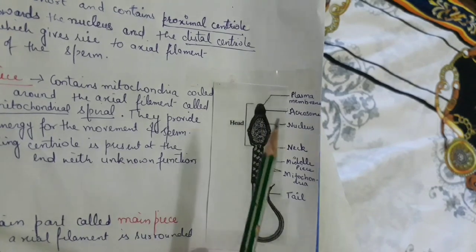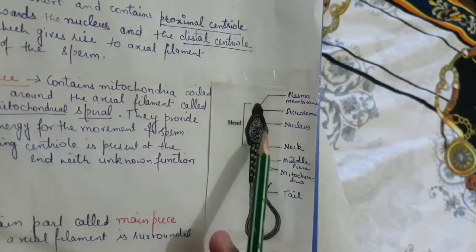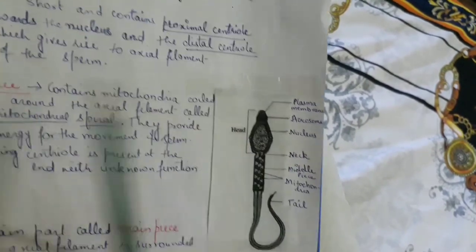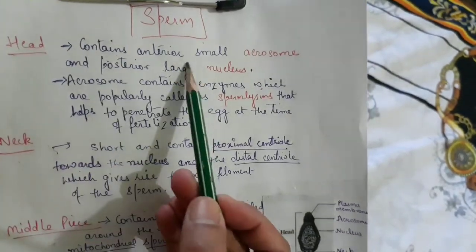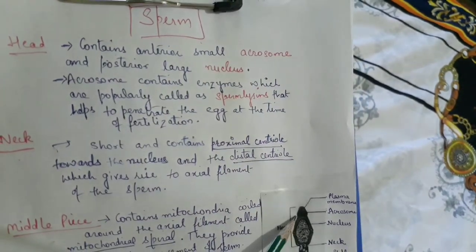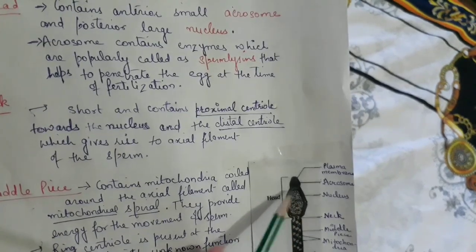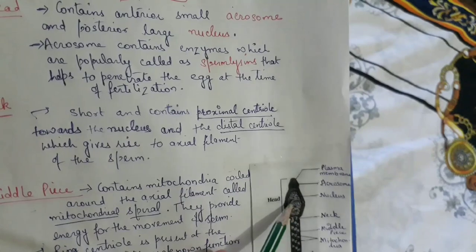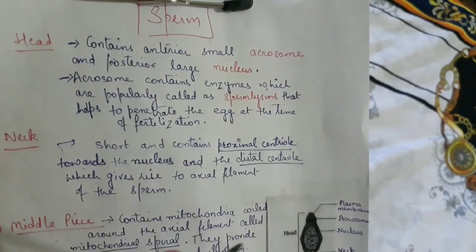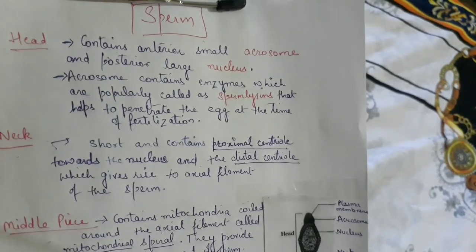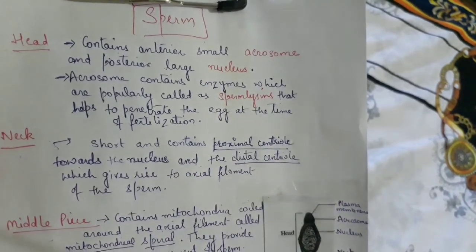The head has a slightly sharp or pointed shape. Inside the head there are two structures: acrosome and nucleus. The acrosome is present at the anterior end — it is a small structure, as you can see in the diagram. The posterior part is larger and that is the nucleus. So acrosome is smaller and nucleus is the larger part of the head.